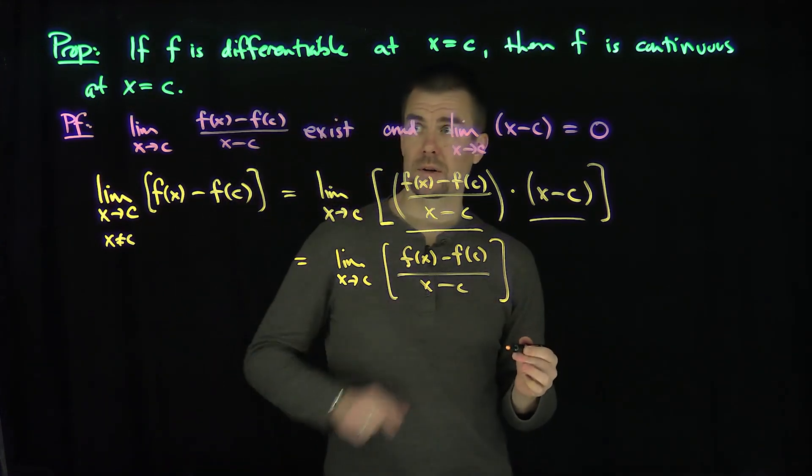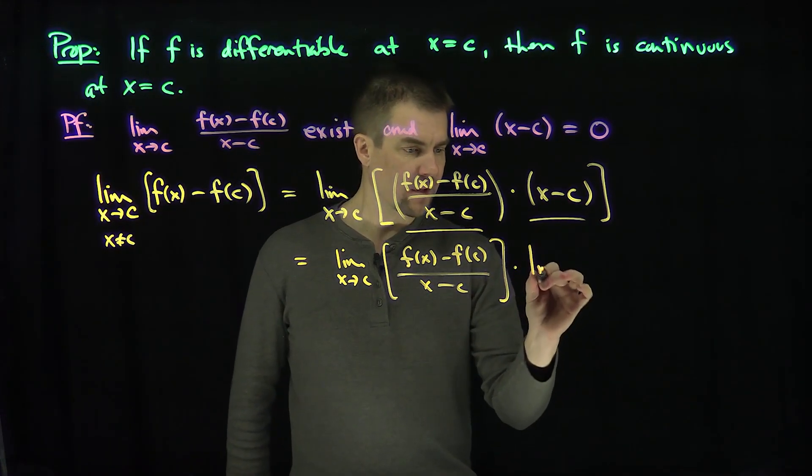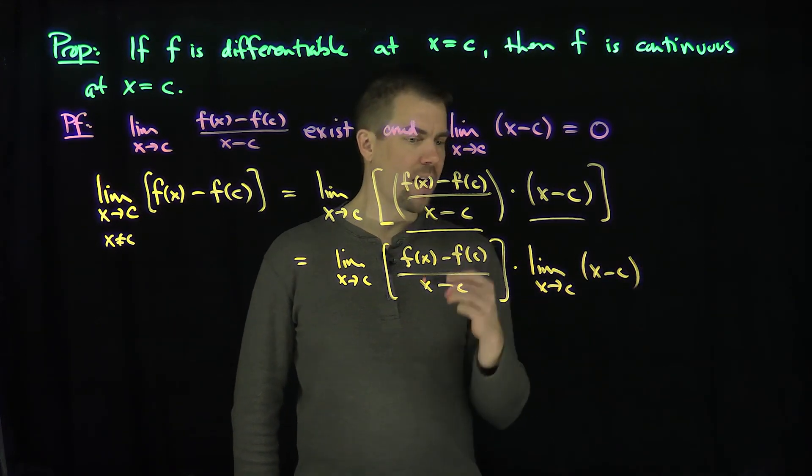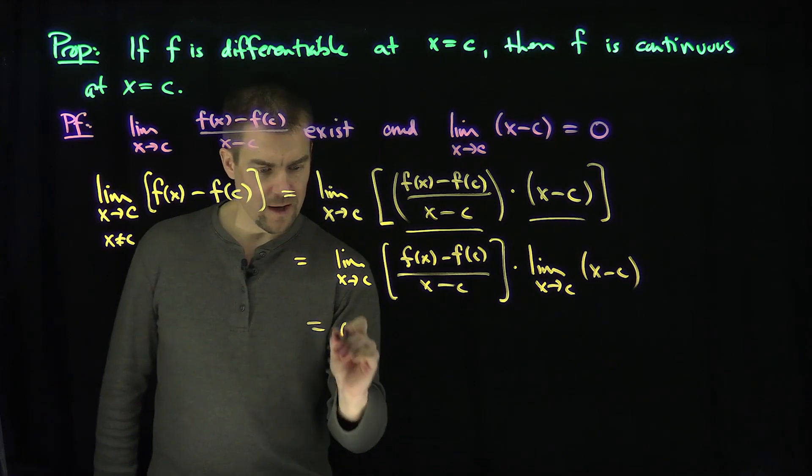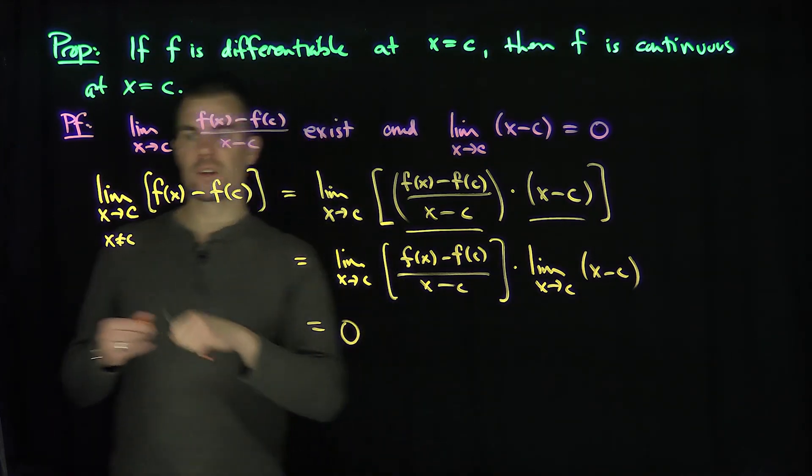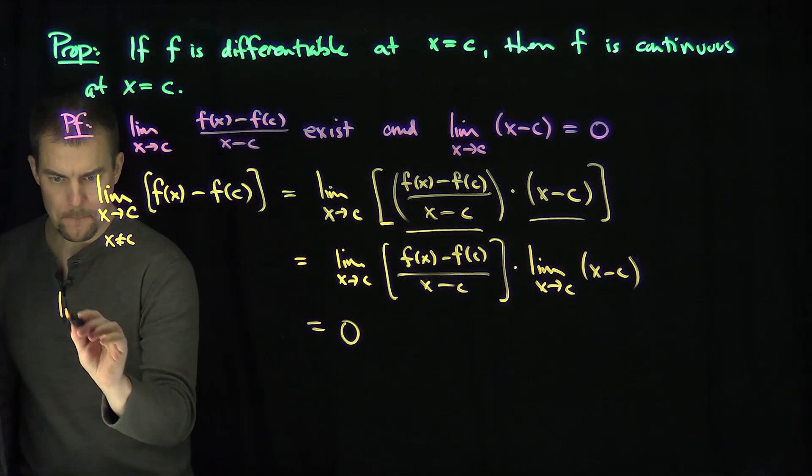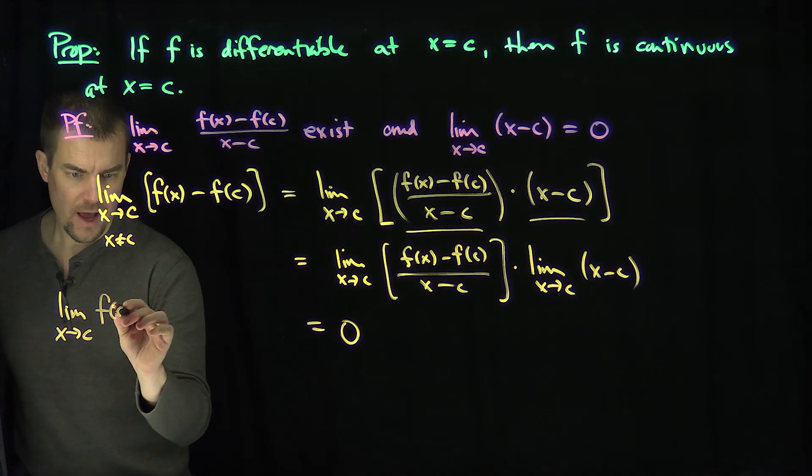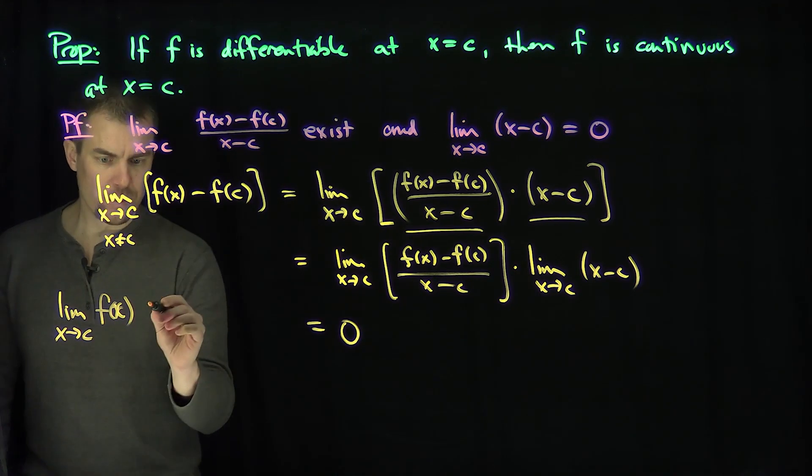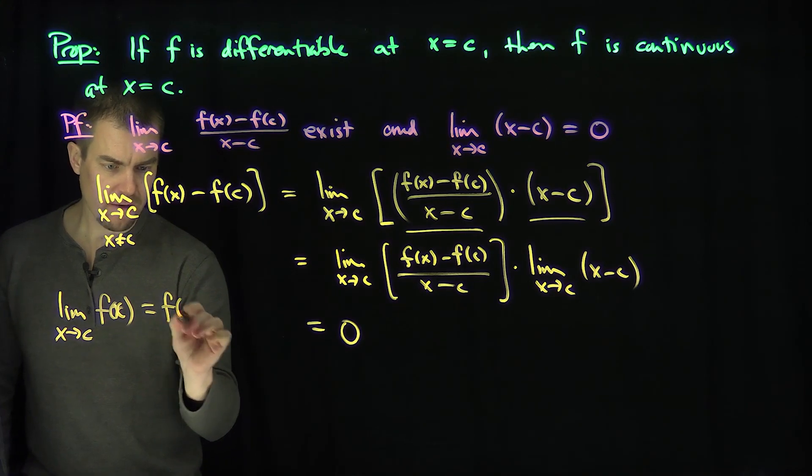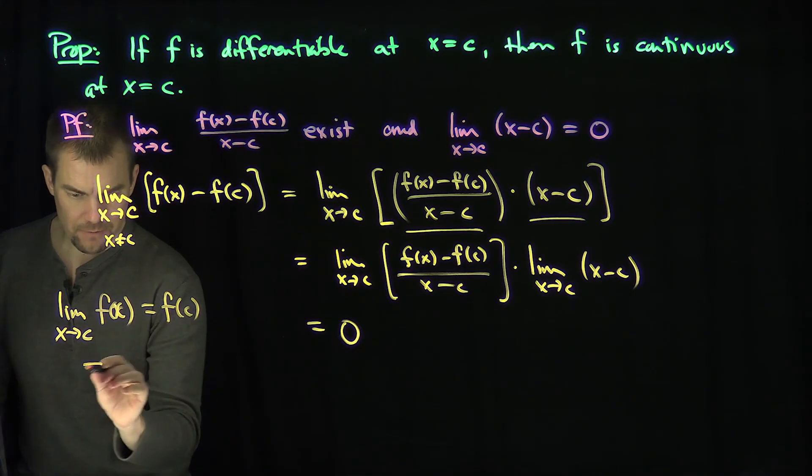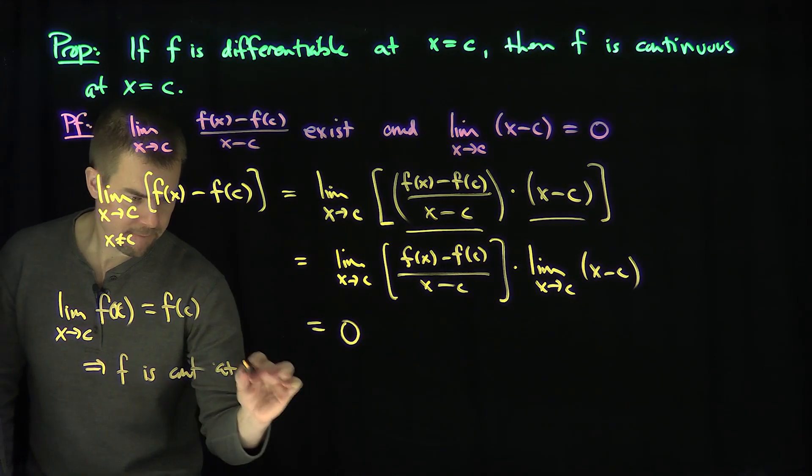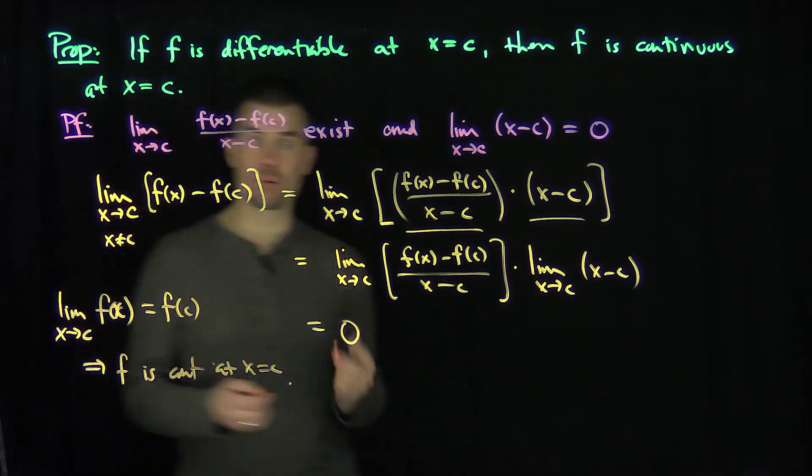We know that limit exists by the assumption that we are differentiable at c, times the limit as x goes to c of x minus c, and we know that limit is equal to zero. So all over this limit is equal to zero. Therefore the limit as x goes to c of f(x) will be equal to f(c), and that proves that f is continuous at c. That's our proof.